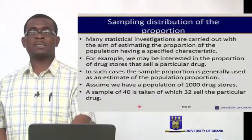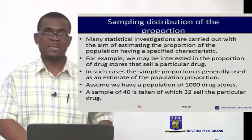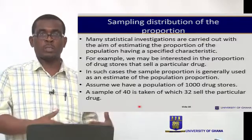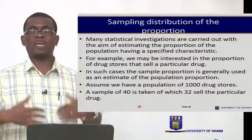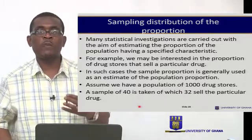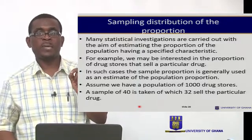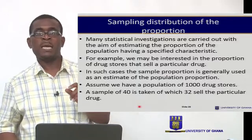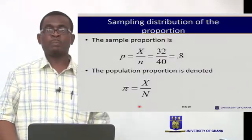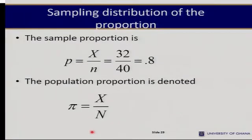Now let's move on to the sampling distribution of the proportion. The proportion is also a useful statistic. Sometimes we're interested in the proportion of a population or sample that has a particular characteristic. For example, we may be interested in the proportion of drug stores that sell a particular drug. Assume we have a population of 1,000 drug stores and a sample of 40 is taken, of which 32 sell a particular drug. The sample proportion p equals the number with that characteristic (32) divided by the sample size, giving 0.8 — meaning 80% of the sample sell that drug.